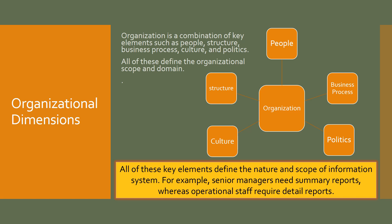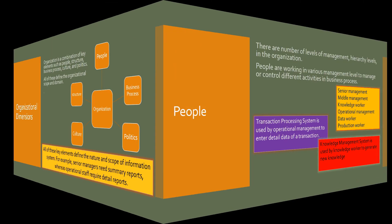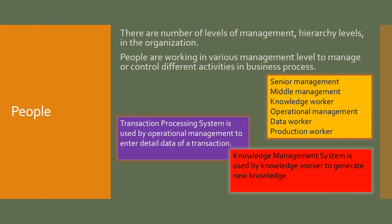For example, people working at the senior level need a different type of information system compared to staff working at the operational level. In an organization, people are the most important element, as they define the system requirements for a business.